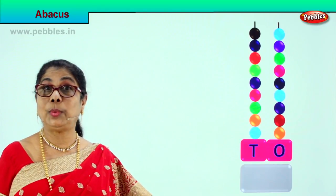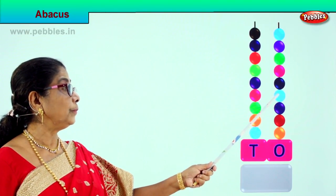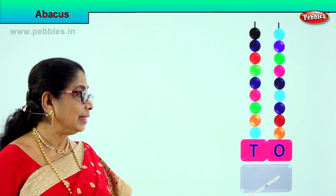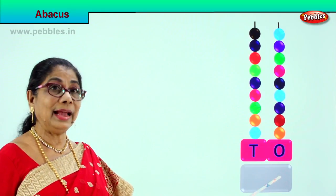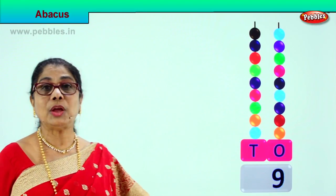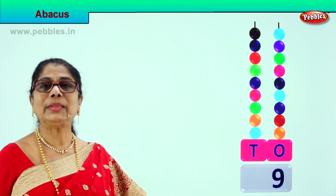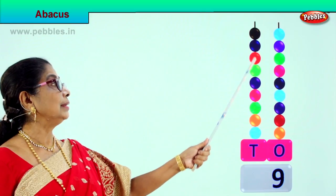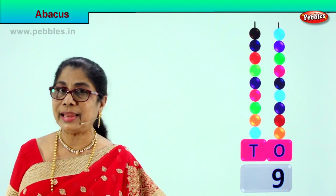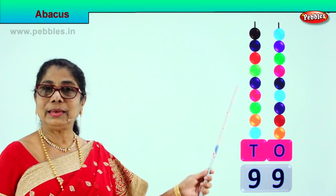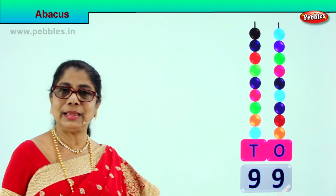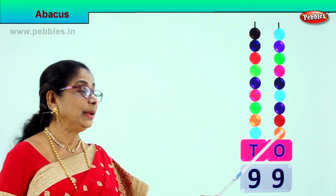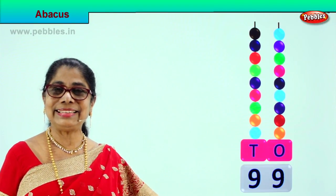Let's count all the ones: 1, 2, 3, 4, 5, 6, 7, 8, 9 — there are nine beads in the ones place. We write nine here, meaning nine ones. Let's count the tens place: 1, 2, 3, 4, 5, 6, 7, 8, 9 — each is ten, so we write nine tens, that is ninety. Nine tens and nine ones is ninety-nine. Each bead in the tens rod is ten; each bead in the ones rod is one. Let's take another sum.